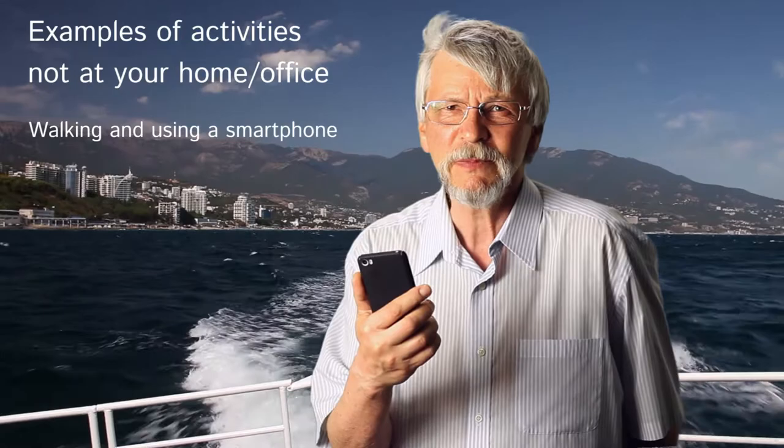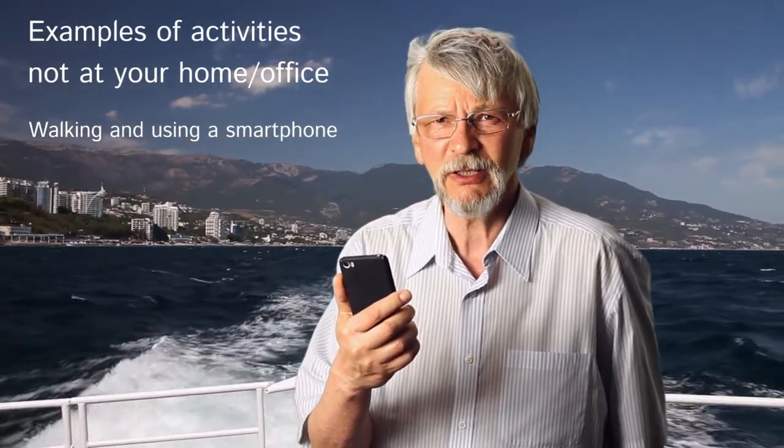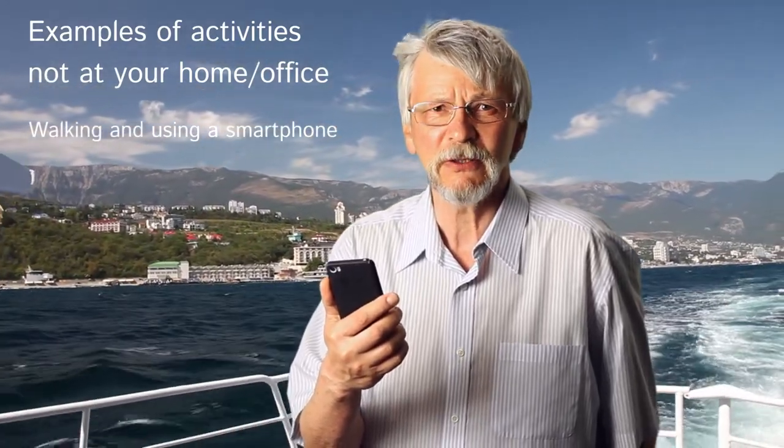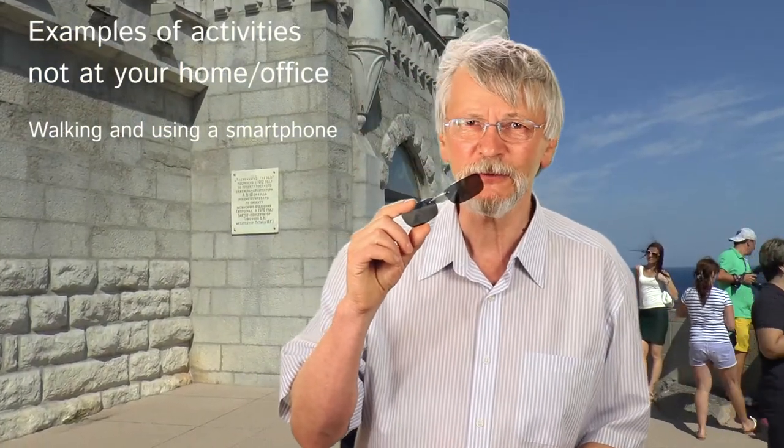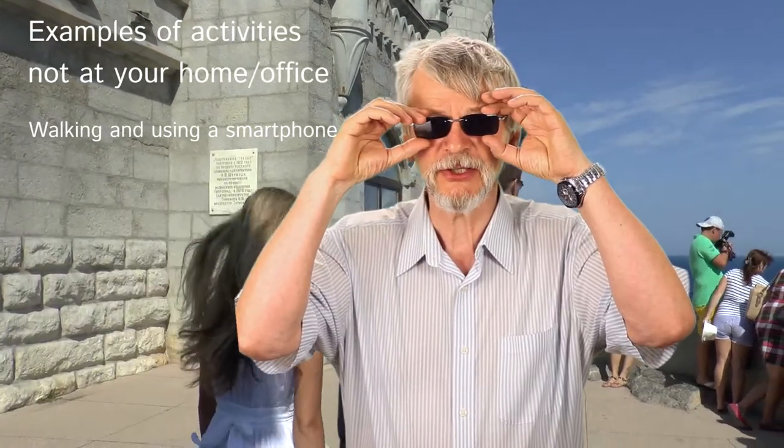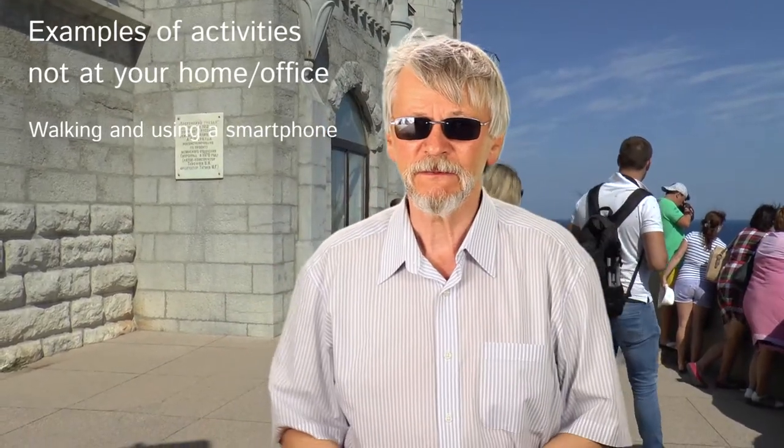If only close objects are blurry and far objects appear normal, then you need simple reading glasses for this kind of activity. If, however, far objects are also blurry, then for this kind of activity you will need bifocals or progressives to view distant objects at infinity as well as your smartphone or other objects at about 20 cm from your eyes. Polarized magnetic clip-on filters are preferred for glasses used for this kind of activity. It is more convenient and much less expensive than photochromic lenses, which are optical lenses that very slowly darken when exposed to UV radiation.